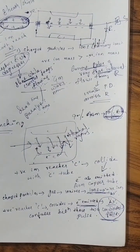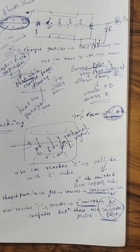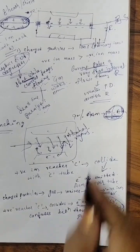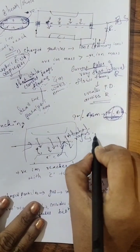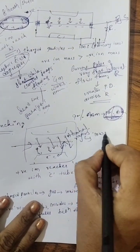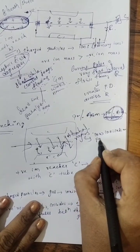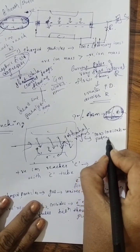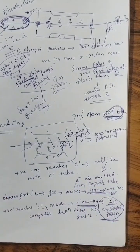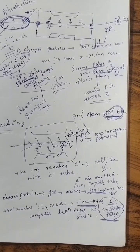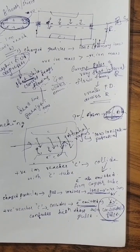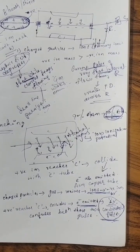To remove this unwanted pulse, alcohol vapors are passed into the GM counter. Alcohol is used because it has a low ionization potential.